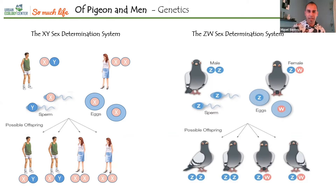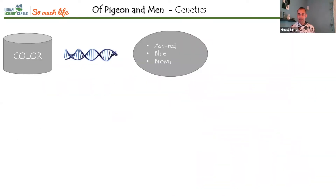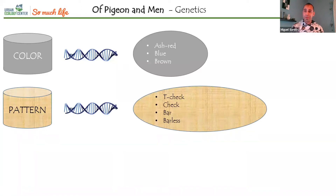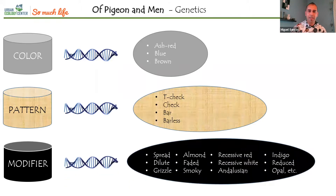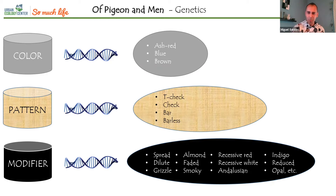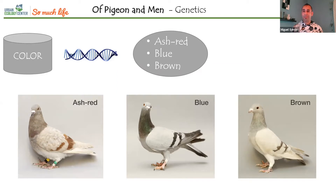Pigeons have three colors and only three colors: ash red, blue, or brown. Pigeons also have a pattern — how that color is distributed along their body — and they are either T-check, check, bar, or barless. So only four patterns and only three colors. Then there are modifiers, which are genes that distribute color in very peculiar ways.